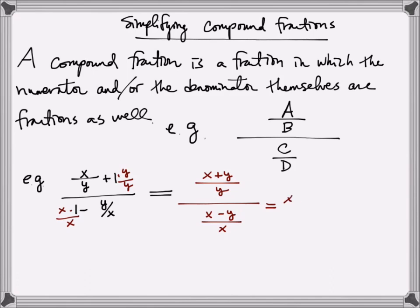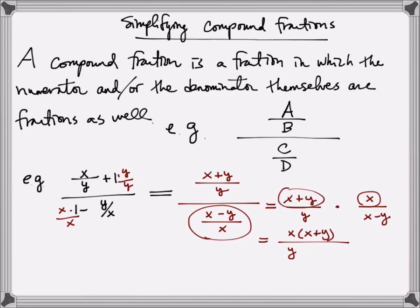I can turn this into a multiplication problem. The first expression stays exactly the same — that's x plus y over y — and I'm going to invert the second expression, putting x on top and x minus y on the bottom. This turns the division into multiplication. Simply multiply and look for common factors: on the top I have x times x plus y, and on the bottom y times x minus y. There is no common factor, so that would be my final answer.